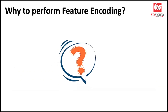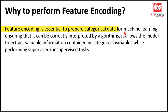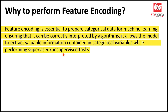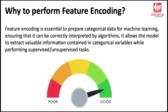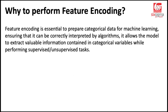Let's now discuss why to perform feature encoding. Feature encoding is essential to prepare categorical data for machine learning, ensuring that it can be correctly interpreted by algorithms. It allows the model to extract valuable information contained in categorical variables while performing both supervised and unsupervised tasks. There is no way that a model will be able to figure out the sense of order unless we supply it that way. So it's essential for our models to be given the right input.